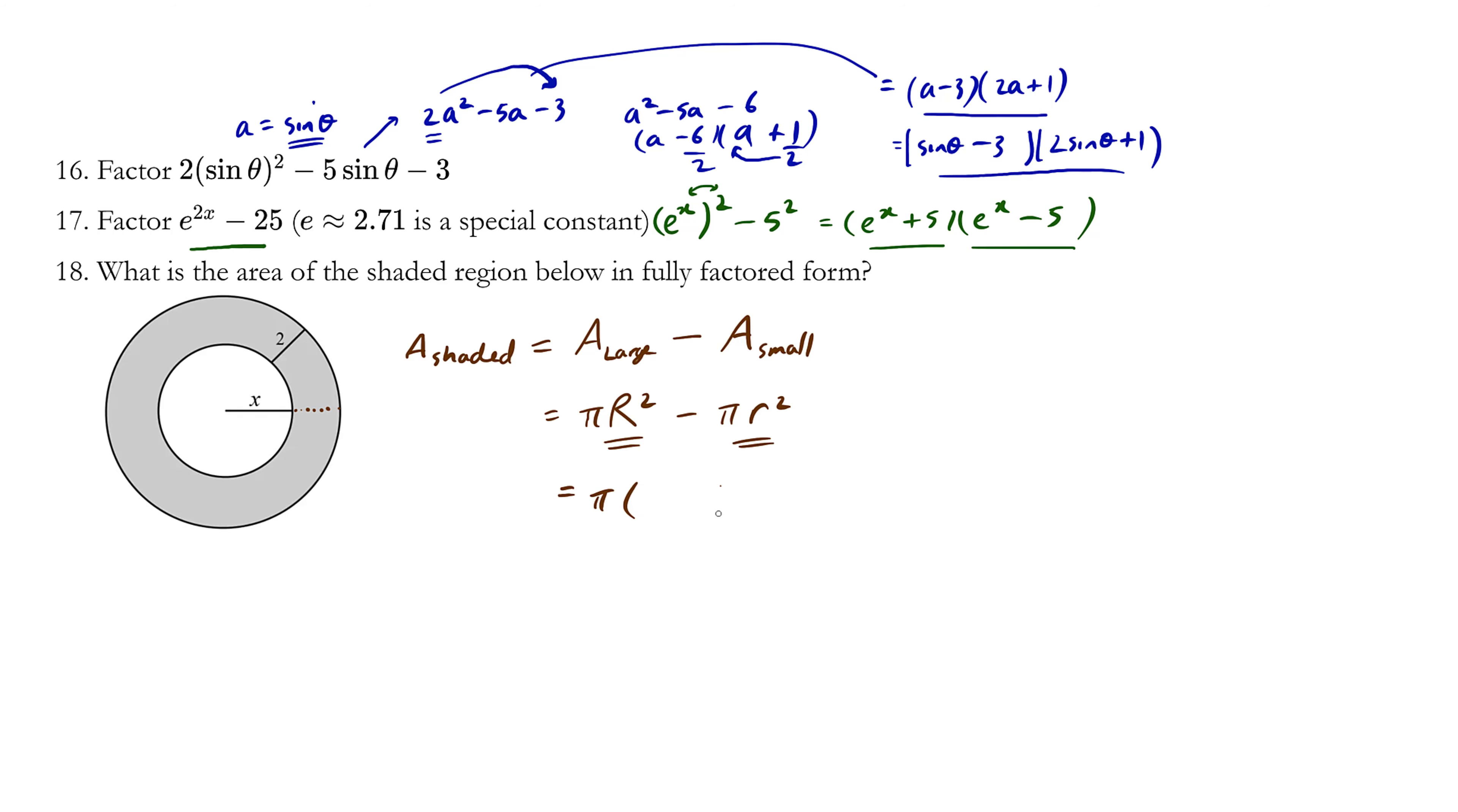So the big radius happens to be x + 2 more units, and the little radius of the circle is simply x.